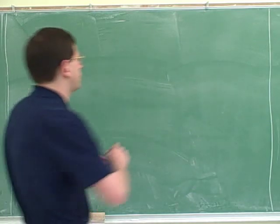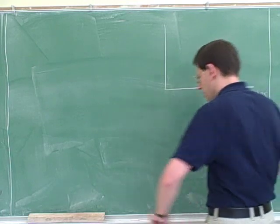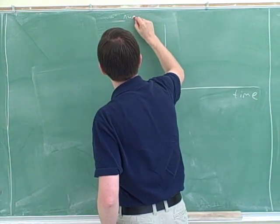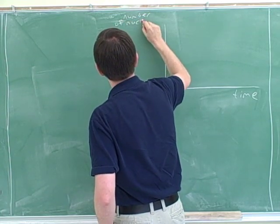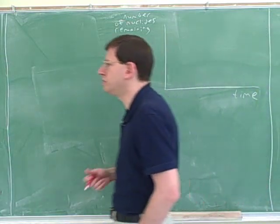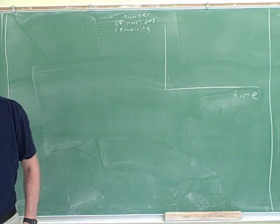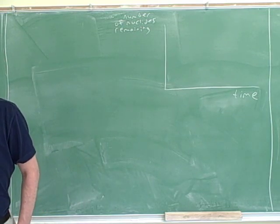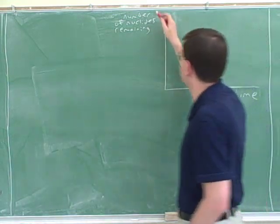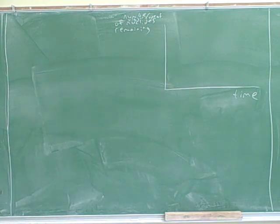Maybe we should start by making a graph then. So in this chapter, they often use the term nuclide. A nuclide is a particular type of nucleus with a particular number of protons and a particular number of neutrons. And if you have a radioactive nuclide, then over time it's going to decay into a different nuclide. So let's make a graph of the number of the original nuclides that are remaining over time. So roughly speaking, what would those graphs tend to look like?